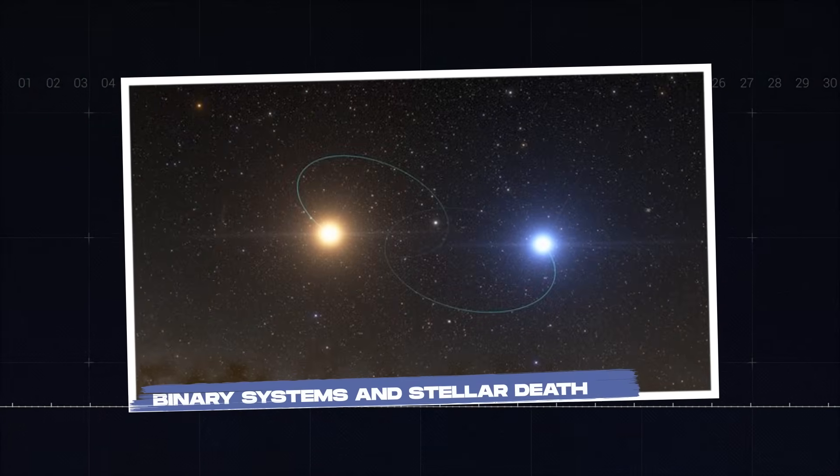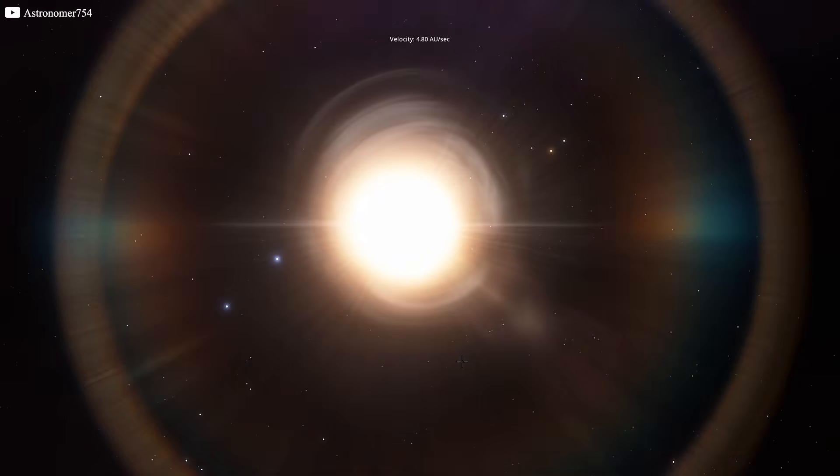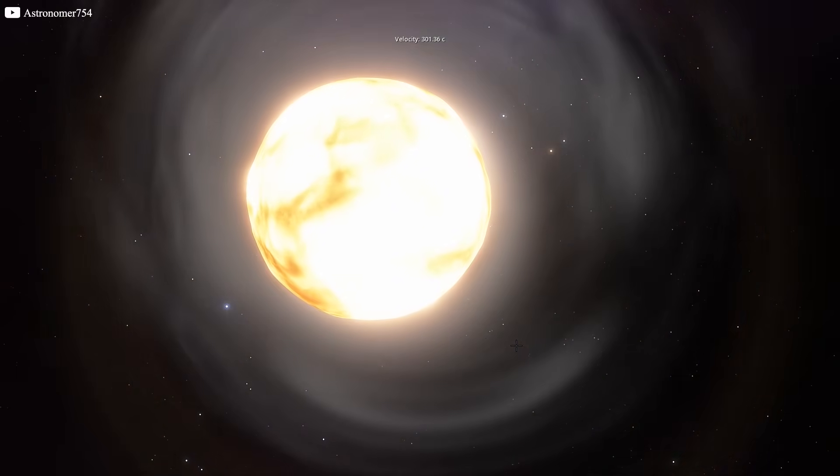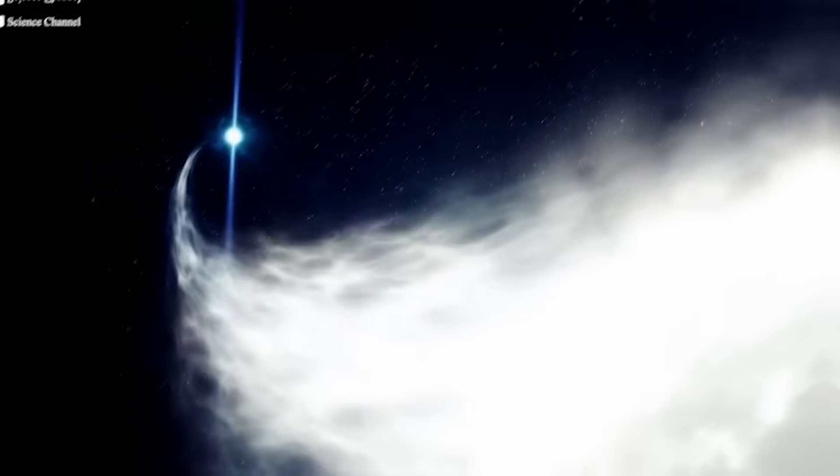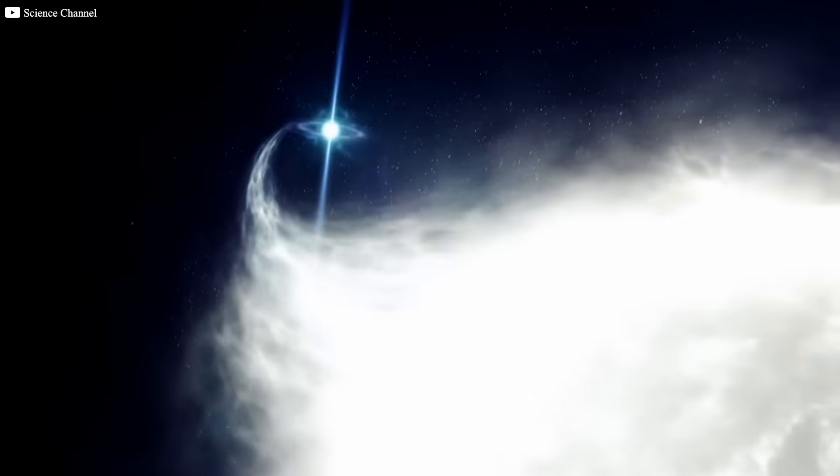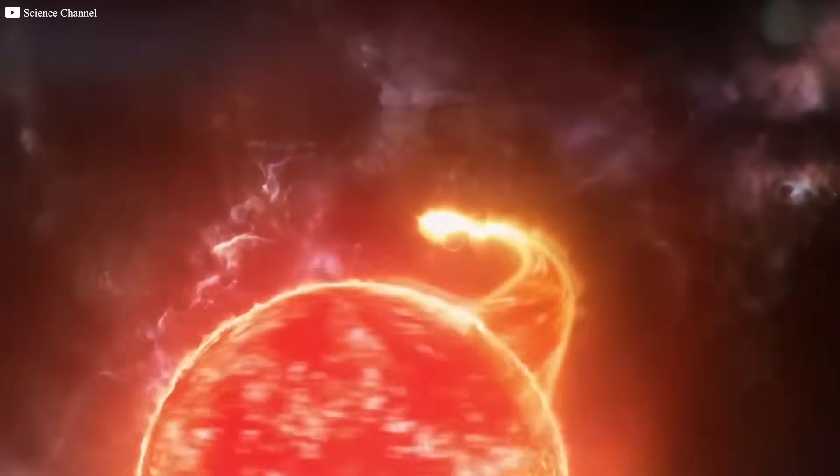Binary Systems and Stellar Death. Antares doesn't travel alone in the cosmos. It belongs to a binary system paired with a companion star known as Antares B. Binary systems like this are crucial to understanding stellar evolution. The interaction between the two stars can influence their aging processes, mass loss and ultimately how they will meet their fate. In such a system, the gravitational pull between the two stars can lead to dramatic consequences, such as material being transferred from one star to the other.